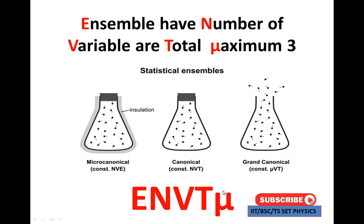If you want to read the variable sets: the first ensemble uses E, N, V — that is ENV. The second one is N, V, T. The third one is V, T, μ. These correspond respectively to micro-canonical, canonical, and grand canonical.